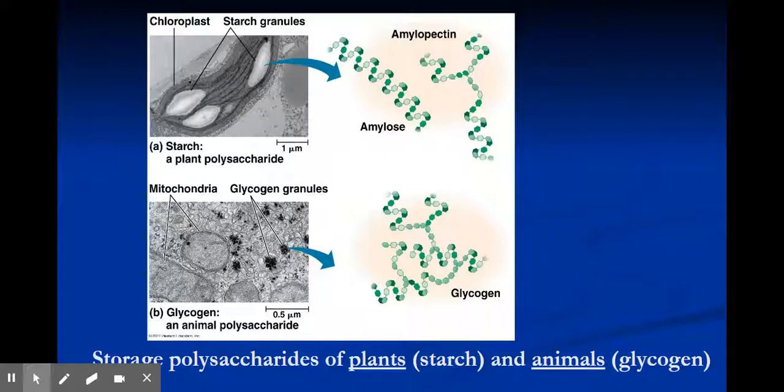However, once again we can see that polysaccharides, depending on the way that it is linked—like for instance with glucose alpha versus beta—it's going to change the function. They're also going to function differently within organisms: plants versus animals, starch and glycogen for instance.